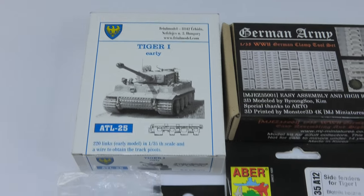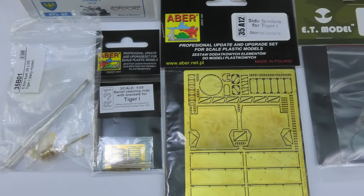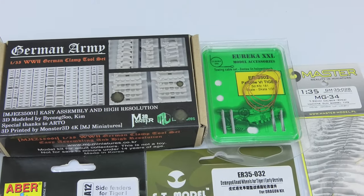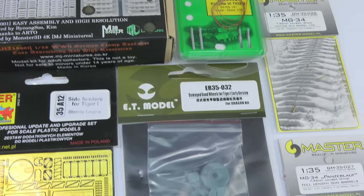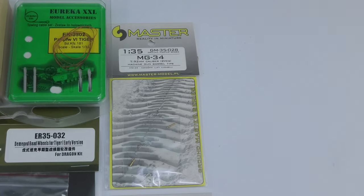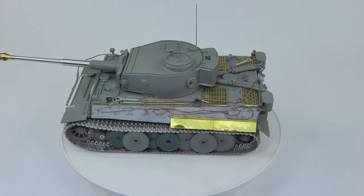And now accessories I have collected to enrich my model: metal tracks from Fuel Model, RB Models metal barrel, Aber's cleaning rods and side fenders, MJ Miniatures 3D clamps, towing cables from Eureka XXL, damaged road wheels from ET Models, and machine guns from Master Model.